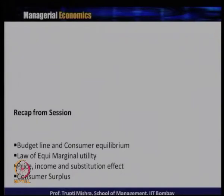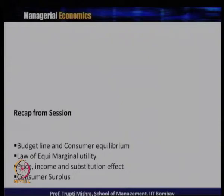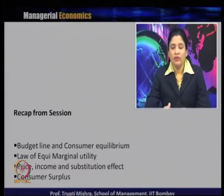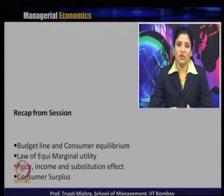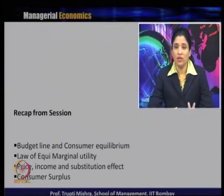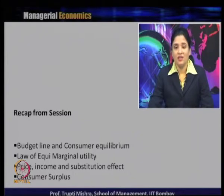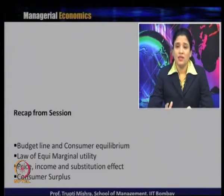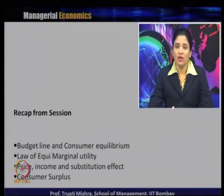In the last class we talked about the budget line and consumer equilibrium — the condition where the budget line is tangent to the indifference curve, and the consumer maximizes satisfaction under a limited income constraint. We also discussed the law of equi-marginal utility, and the price effect as the summation of the substitution effect and the income effect.